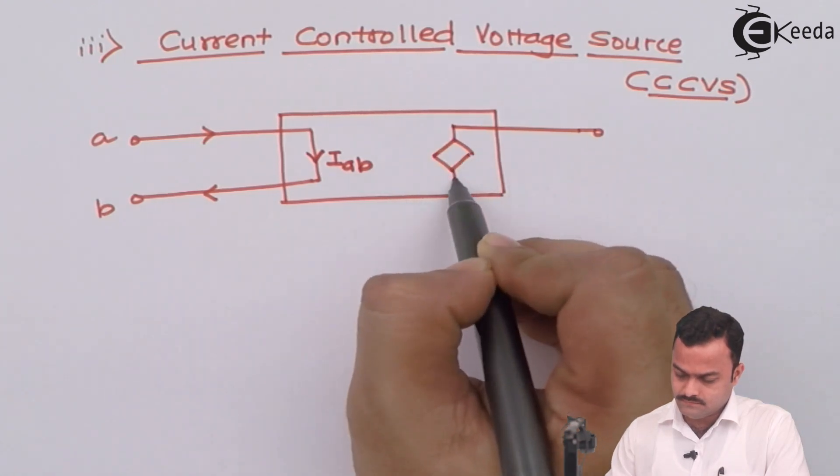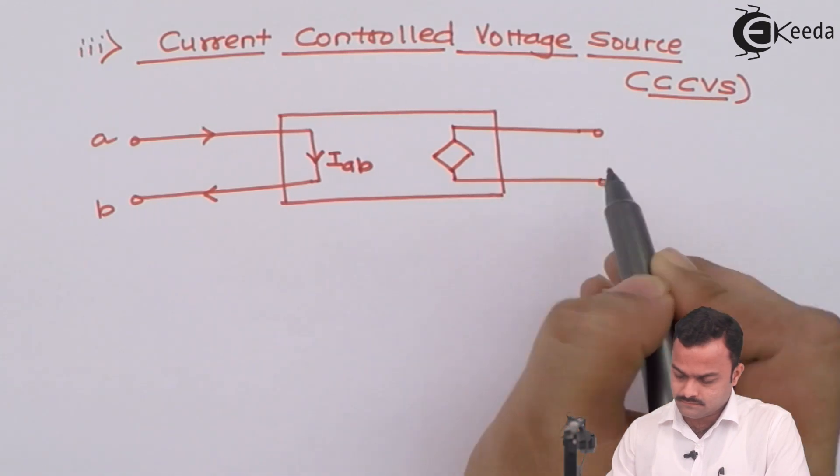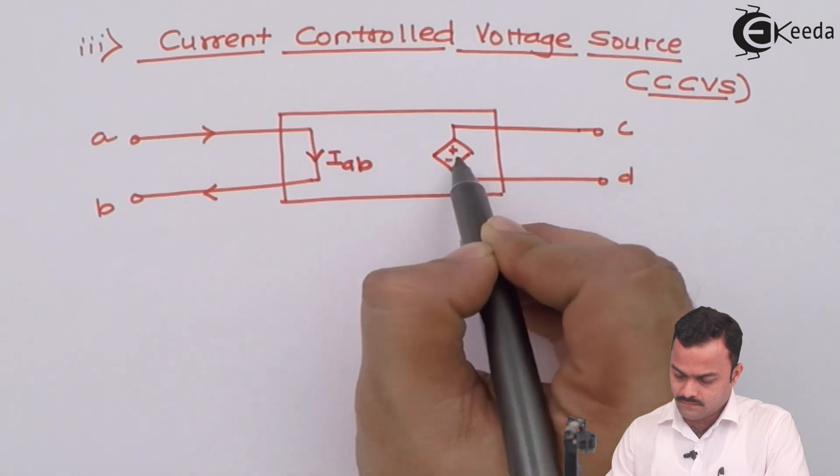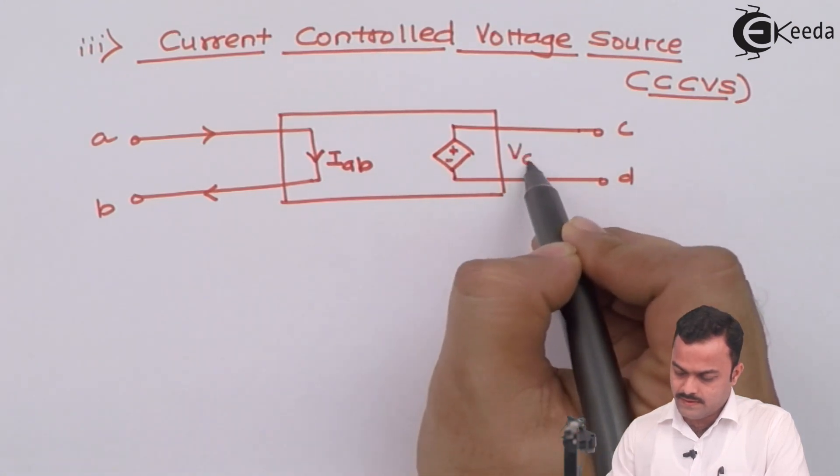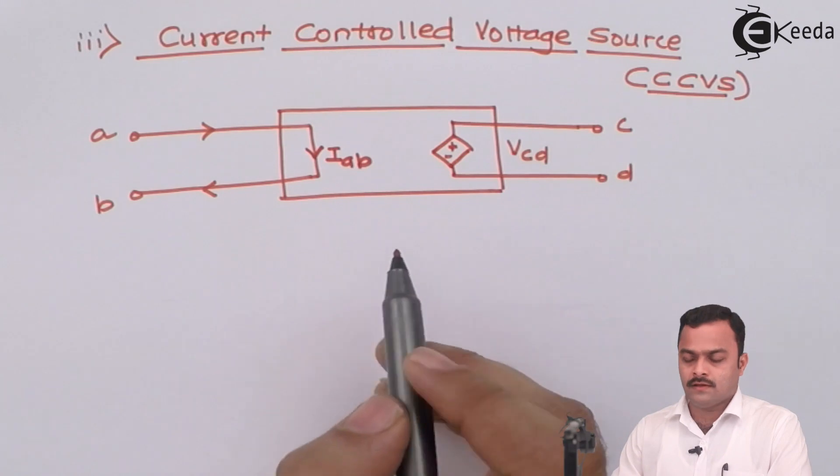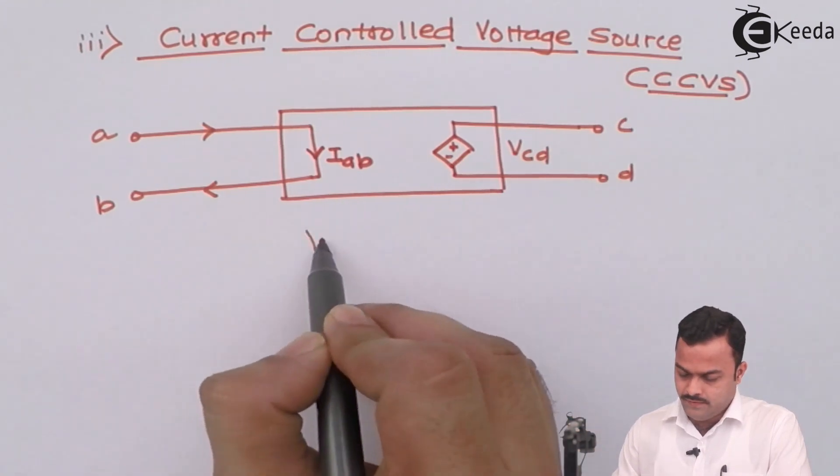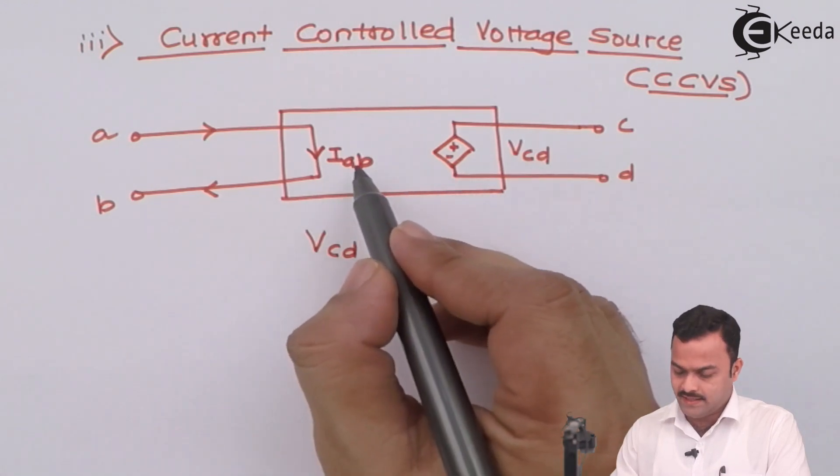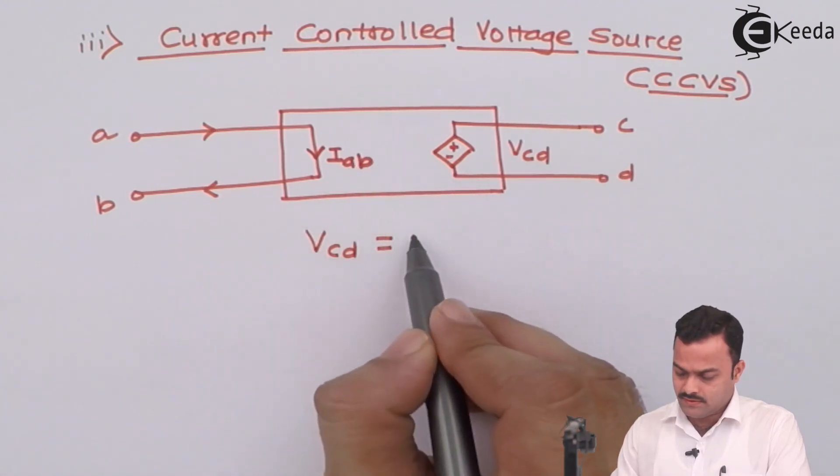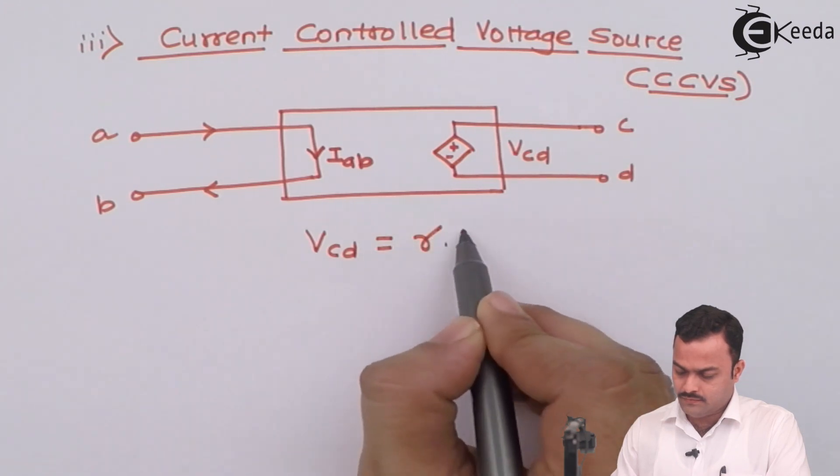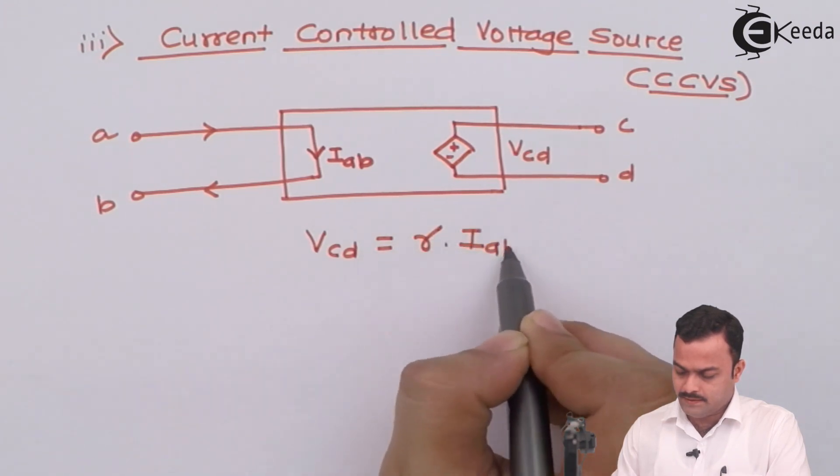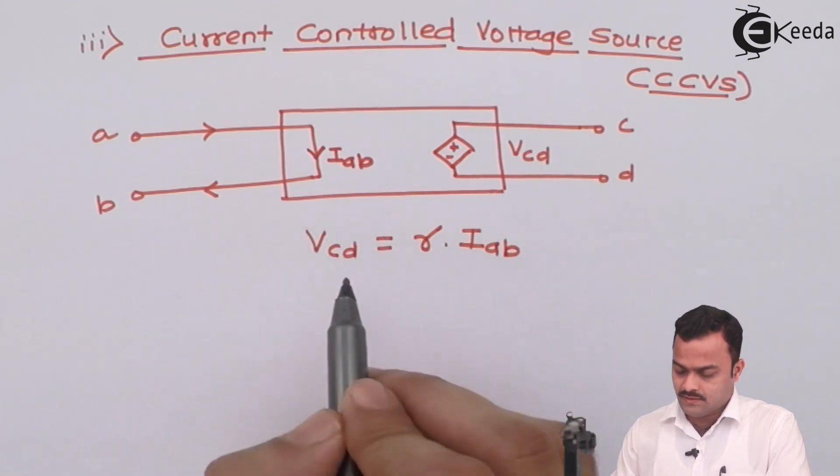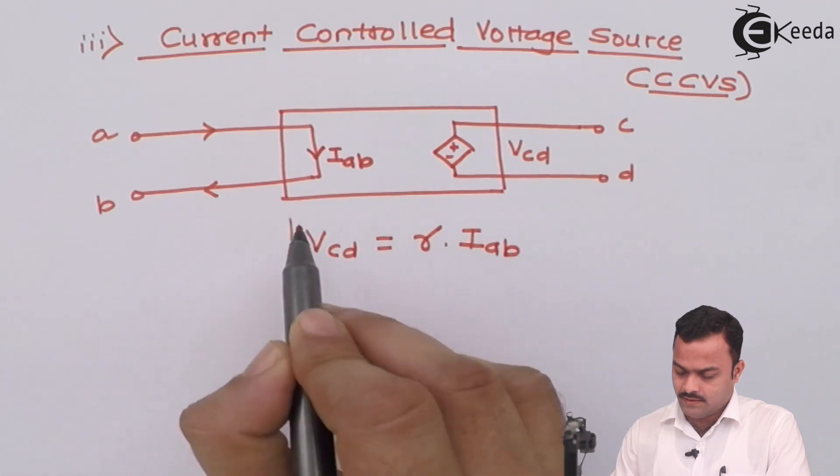We can say this voltage is VCD. VCD is voltage depends on this current IAB.